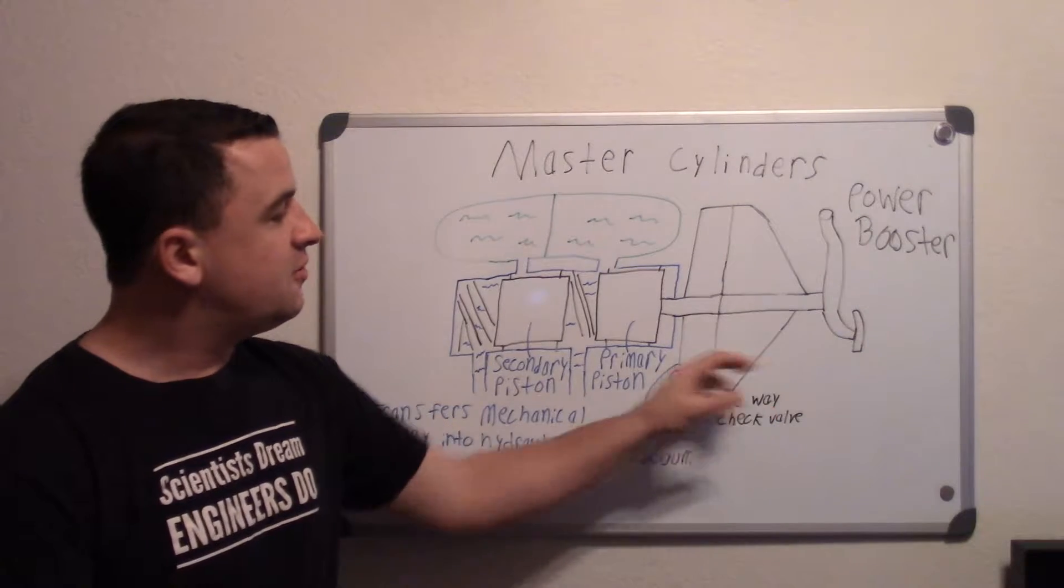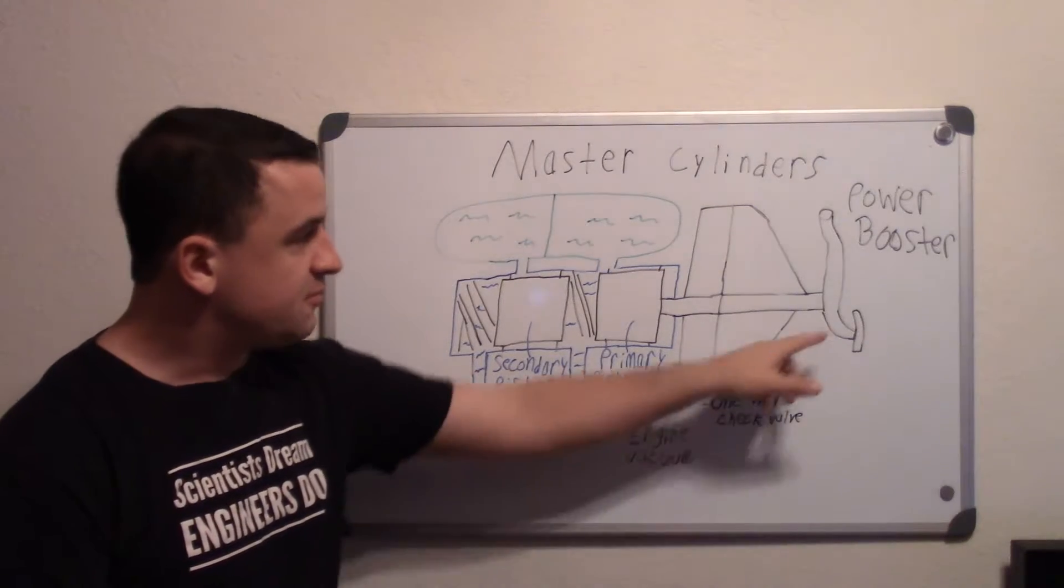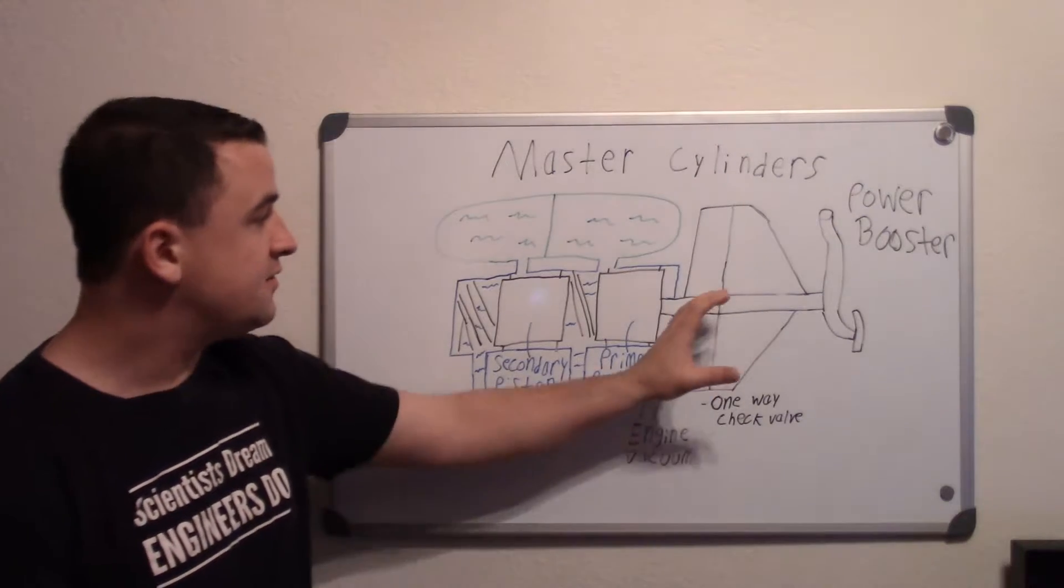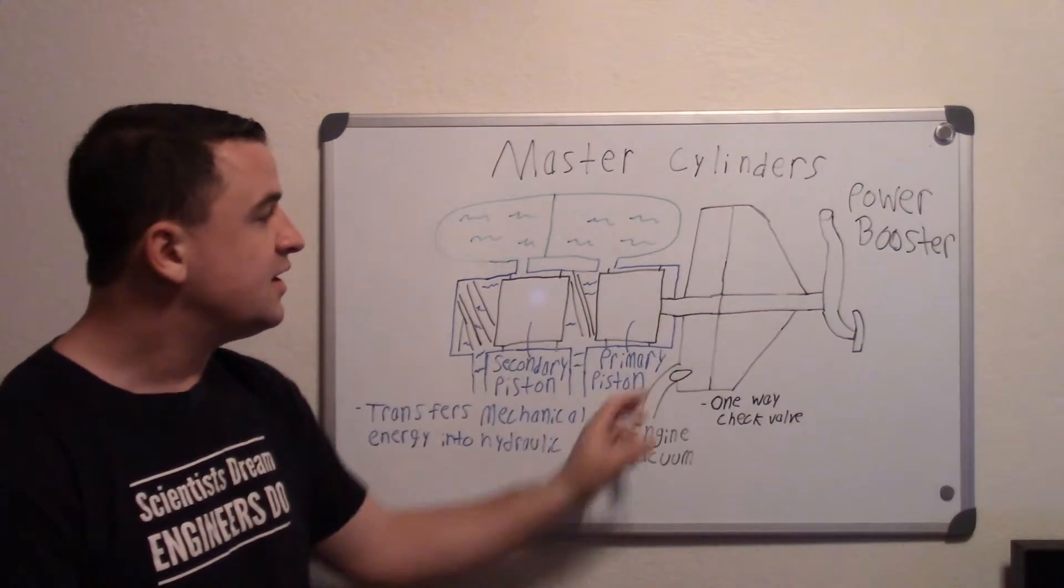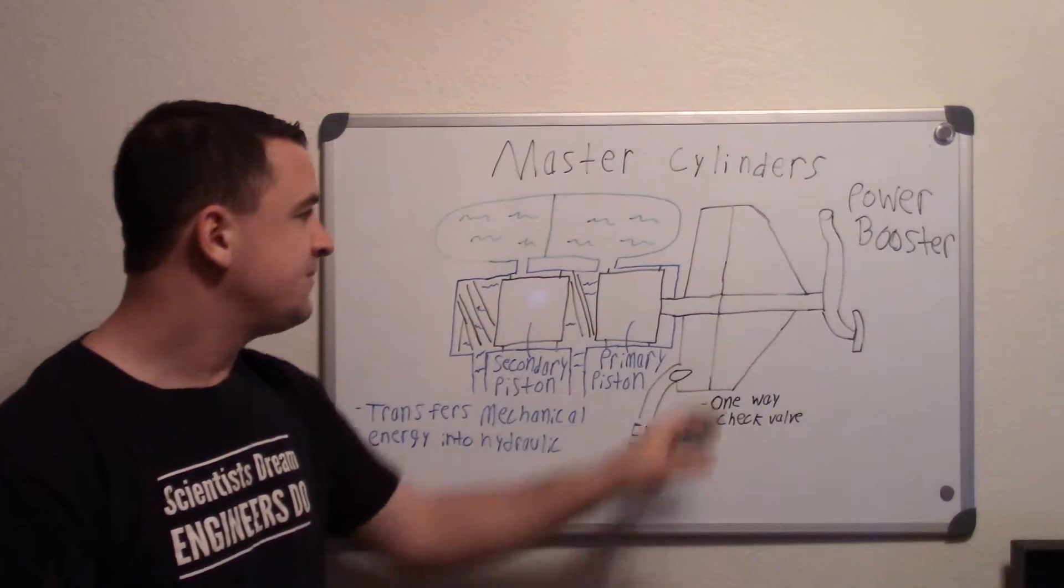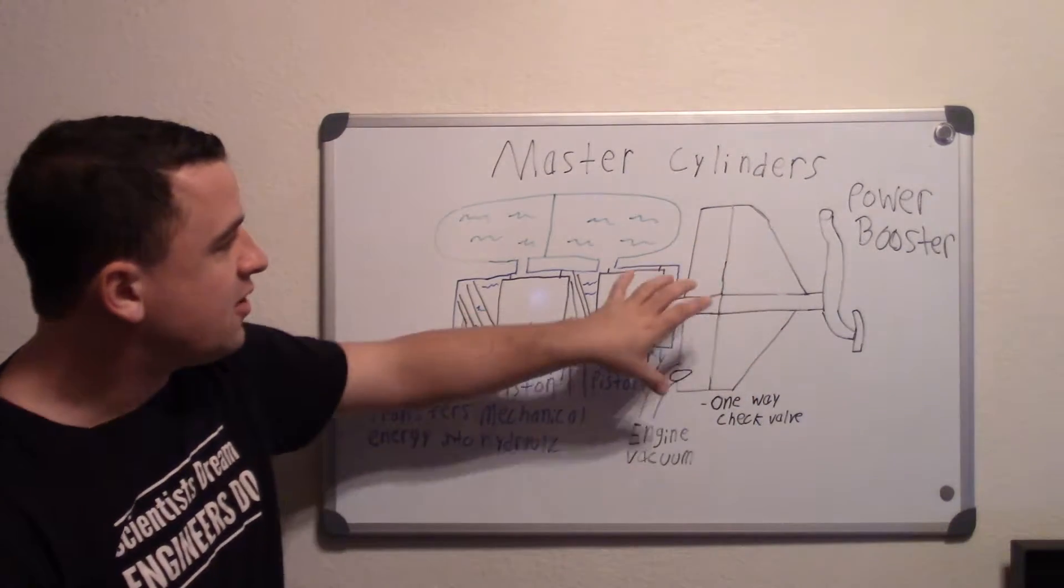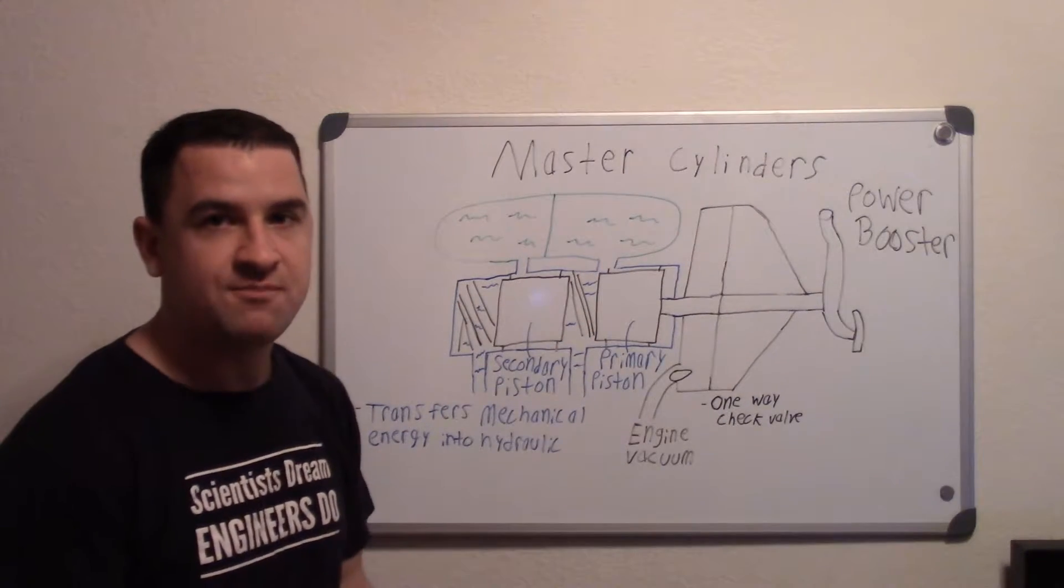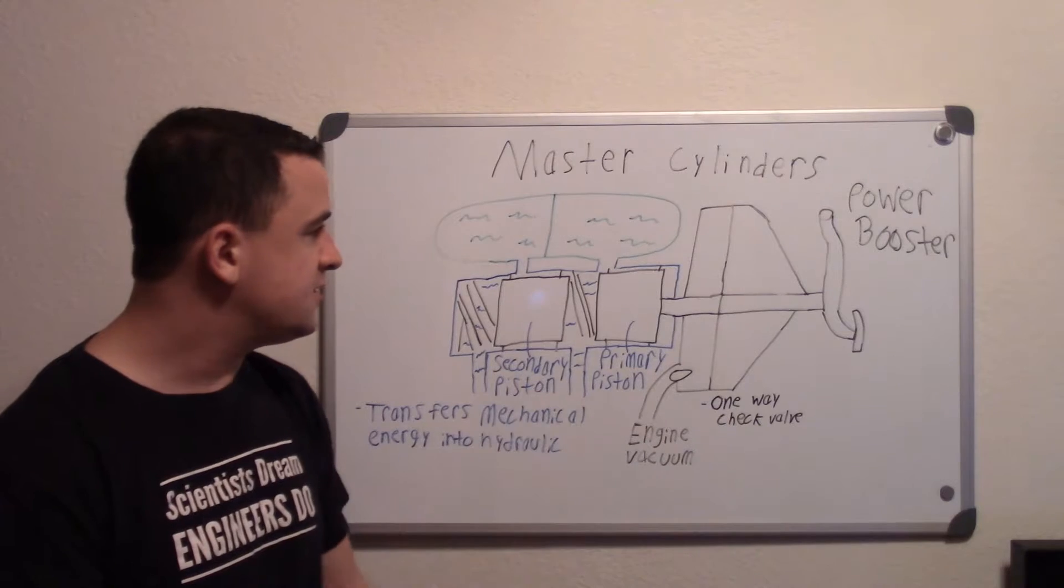And then when you open it you have this one way check valve. When you press on the brake pedal, this one way check valve starts opening and allows vacuum to come this way. It allows the air to come this way so that this side right here, this vacuum is actually stronger. And so it starts kind of winning that war and starts pushing the diaphragm this way. And that's what helps you with the power assistant.